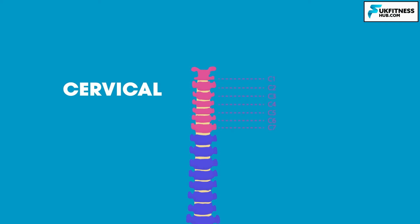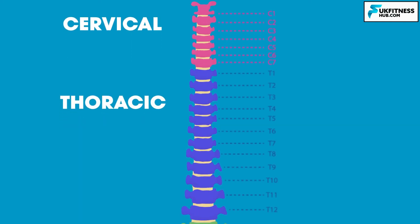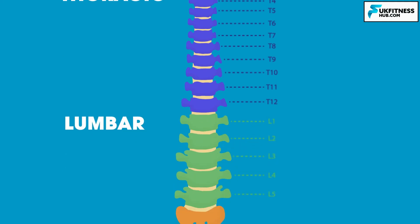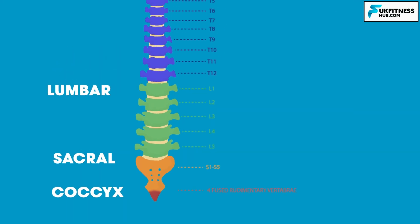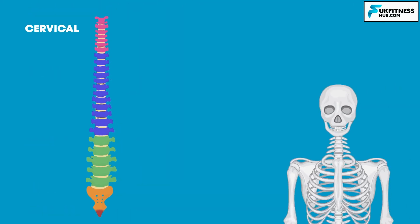We have 7 cervical vertebrae numbered C1 to C7, 12 thoracic vertebrae numbered T1 to T12, 5 lumbar vertebrae numbered L1 to L5, 5 sacral fused vertebrae numbered S1 to S5, and the coccyx contains 4 fused rudimentary vertebrae, though in some people this can differ between 3 to 5 fused vertebrae.